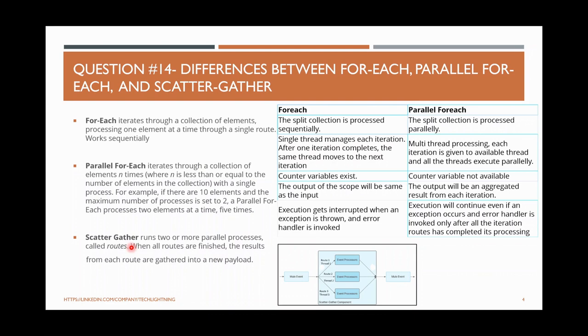Scatter-Gather also runs in parallel. For example, you have a collection — the entire payload is copied to each route in Scatter-Gather. Assume you have 3 routes: one sends employee information to HR database, another goes to admin department, and one more to the IT department. The entire payload is copied to each route and the requests go in parallel, so HR database, admin database, and IT database all get updated simultaneously.